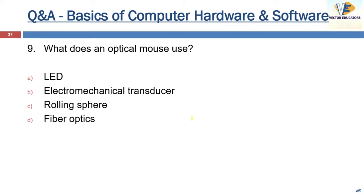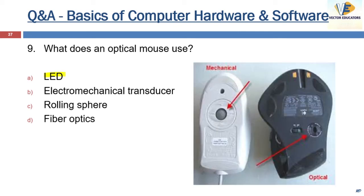What does an optical mouse use? The answer is LED — Light Emitting Diode. The traditional mechanical mouse uses a ball and an electromechanical transducer; it detects movement by interpreting the motion of the rolling sphere. The optical mouse uses a light emitting diode, an optical sensor, and digital signal processing — movement is detected by sensing changes in the reflected light.